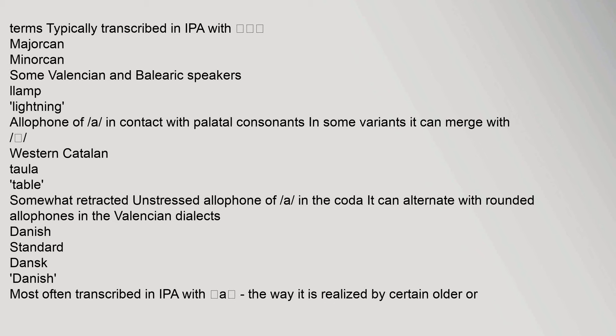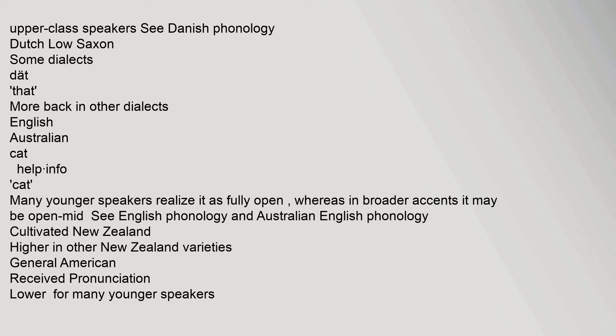In the coda it can alternate with rounded allophones in the Valencian dialects. Danish: standard Danish, most often transcribed in IPA with /a/; the way it is realized by certain older or upper-class speakers. See Danish phonology. Dutch Low Saxon: some dialects — 'dat' (that); more back in other dialects.